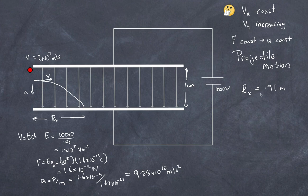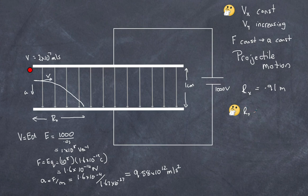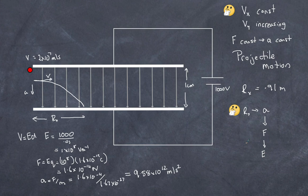Now imagine the problem is reversed — you're given the range of the particle and the entry velocity, and you need to determine the voltage. The thinking process: use projectile motion to find the acceleration; given the mass, calculate the force; from the force, determine the electric field; then finally calculate the voltage across the plates.